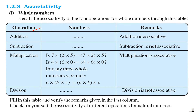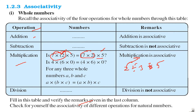Associativity means if you add whole numbers, the grouping doesn't matter and you get the same value. Subtraction is not associative for whole numbers. If you multiply — say 7 into 2 into 5: if you do 7 into 2 first and then multiply by 5, the result is the same both ways — so multiplication is associative. When you divide, say 2 divided by 3 divided by 5, changing the grouping may not give the same result — division is not associative.